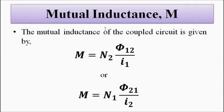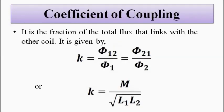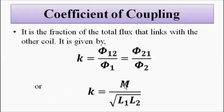Next is the coefficient of coupling. It is the fraction of the total flux that links with the other coil — essentially the ratio between the mutual flux and the total flux. It is given by k = φ12/φ1 = φ21/φ2, since φ12 and φ21 are the same. It is also given by k = M / √(L1·L2), the ratio between the mutual inductance and the square root of the product of the self inductances of coil 1 and coil 2.